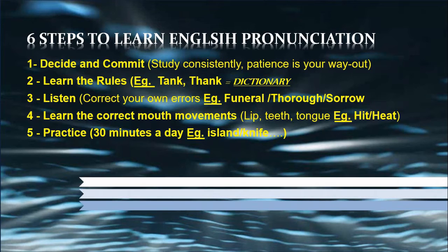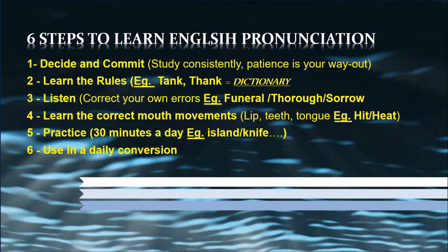Step five: practice daily. Practice for 30 minutes and you'll see the difference. For instance, there are some silent letters in English words like 'island' and 'knife.' Some speakers mispronounce these by sounding out the silent letters, saying 'is-land' or 'k-nife,' which is wrong. You need to practice these. Step six: use new pronunciations in daily conversation. Once you have learned the correct pronunciation of a word, use it in your daily conversation — that is how you master it.